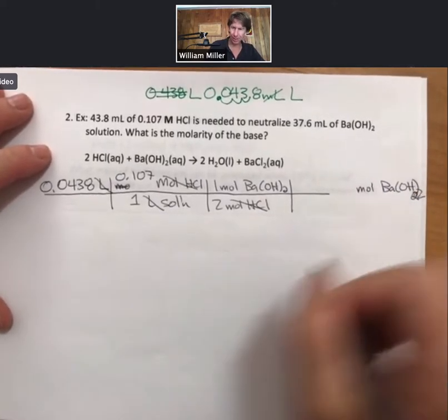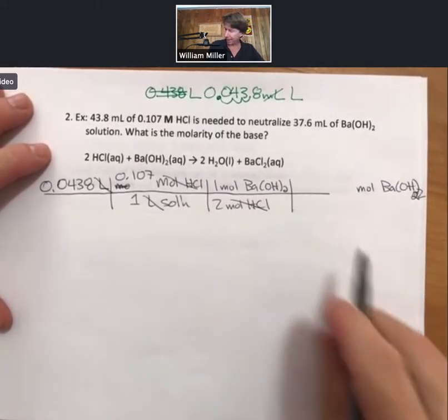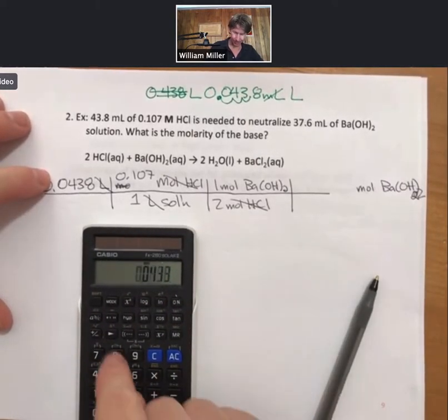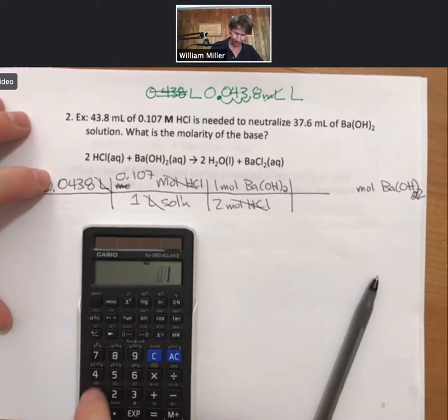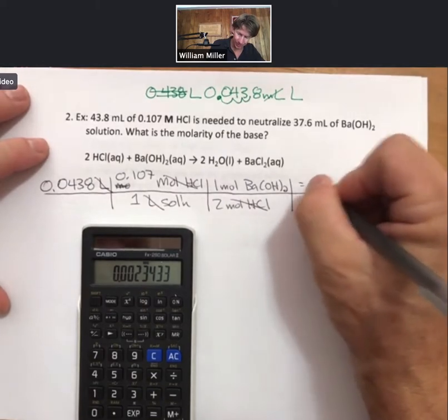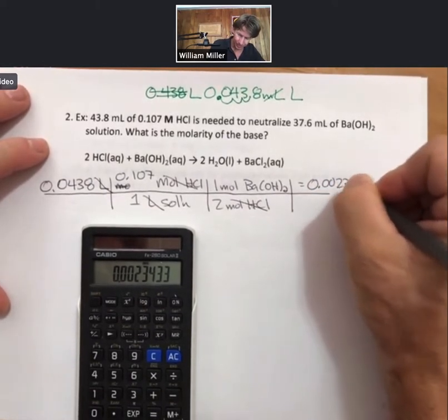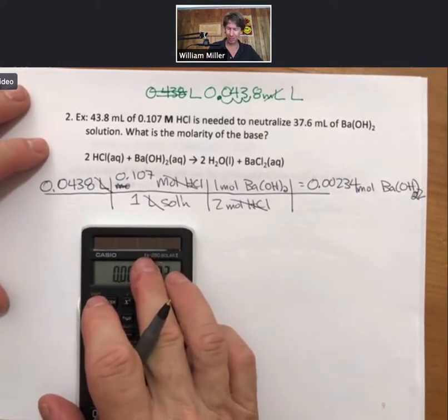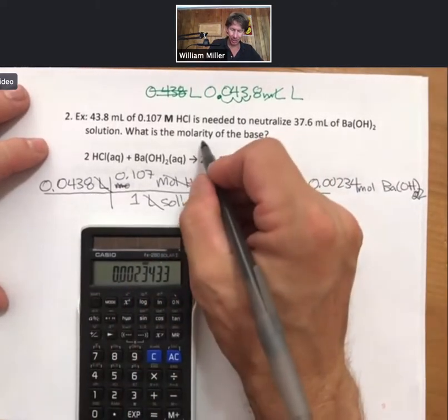I'm just going to take a step back and I'm going to go ahead and solve it like it is. I have my liters canceling, I have my moles of HCl canceling, and I'm left with my moles of barium hydroxide. And multiplying this out, I get 0.00234 to three sig figs, moles of barium hydroxide. But I'm asked for molarity.